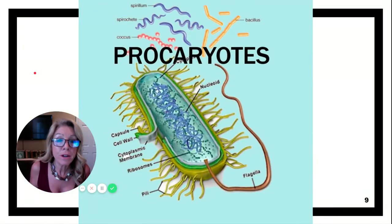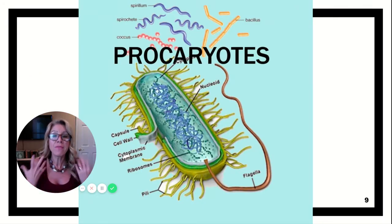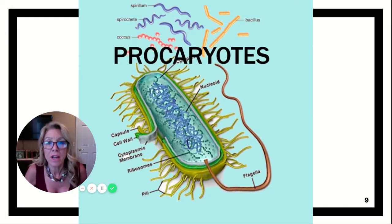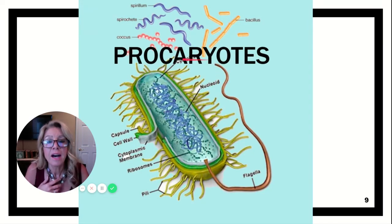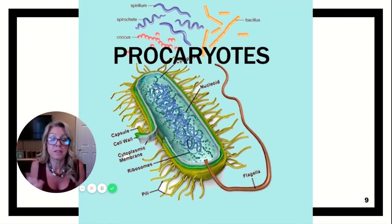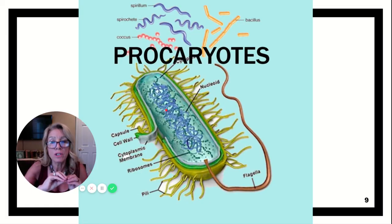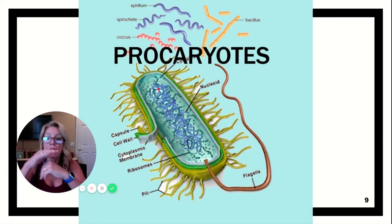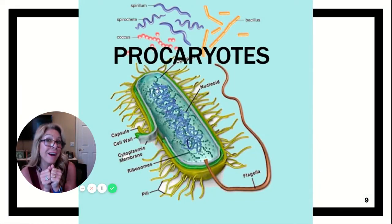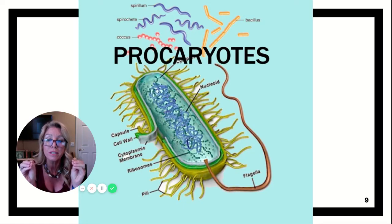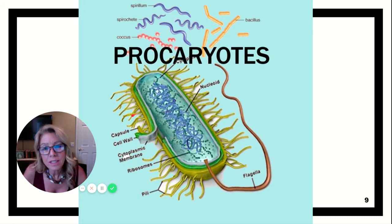Prokaryotic cells are smaller than eukaryotic cells — about the size of an organelle in a eukaryotic cell. They have different shapes. You won't see a mitochondria or a nucleus because they don't have any of those. They do have DNA — it's just in a region called the nucleoid region. They have ribosomes, which are the workbench to synthesize proteins: ribosomes hook amino acids together to build proteins in a process called translation.